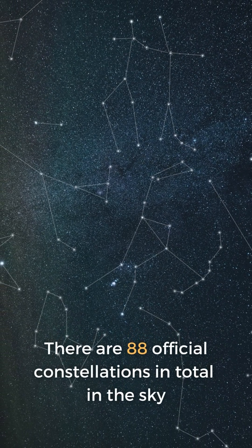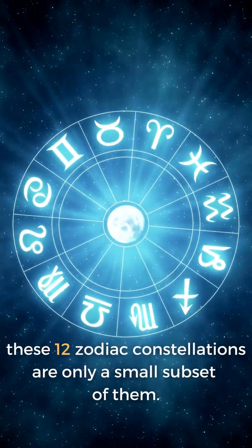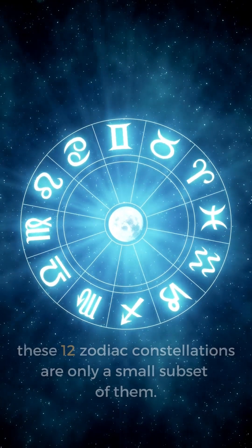There are 88 official constellations in total in the sky. These 12 zodiac constellations are only a small subset of them.